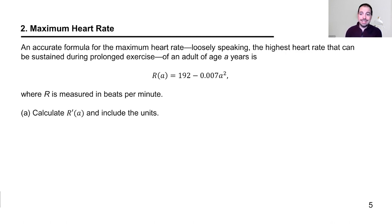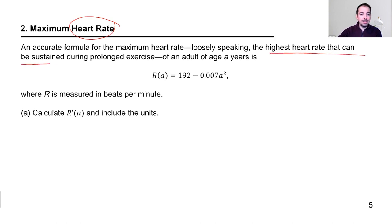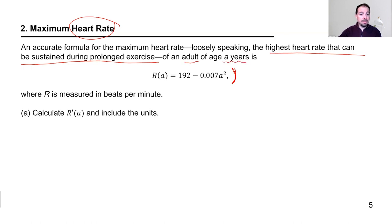This second application is especially relevant if you go to the gym or go for a run. It's about maximum heart rate — loosely speaking, the highest heart rate that can be sustained during prolonged exercise. Here is a model for the maximum heart rate R of an adult of age A years: R of A equals 192 minus 0.007 A squared.